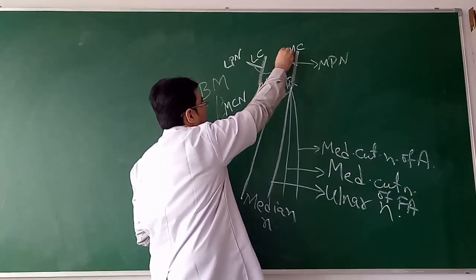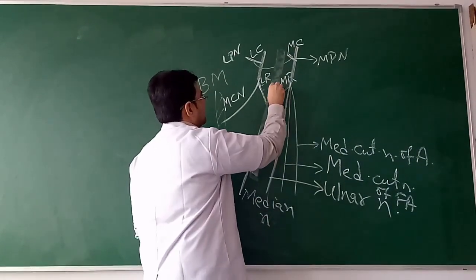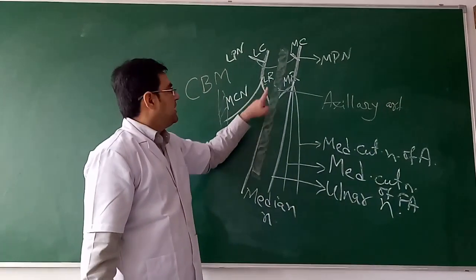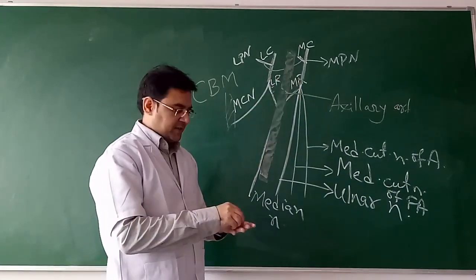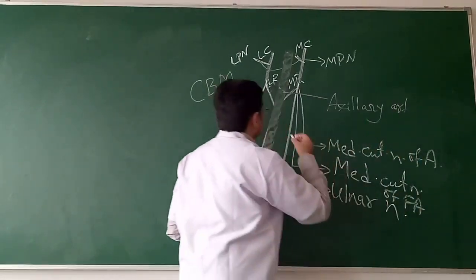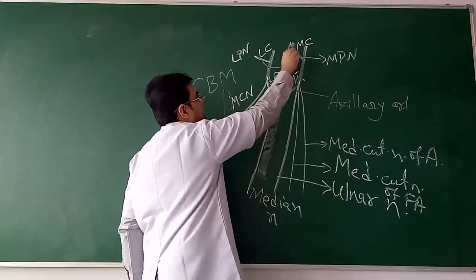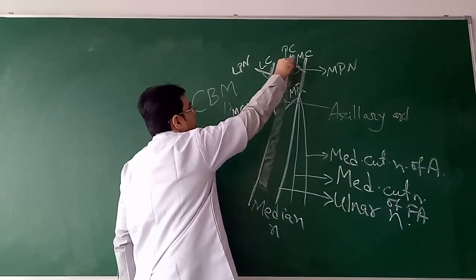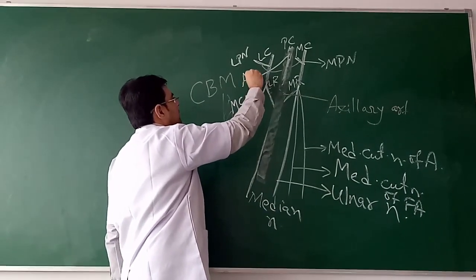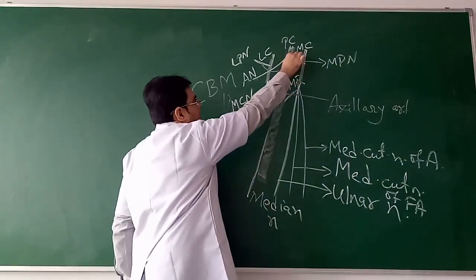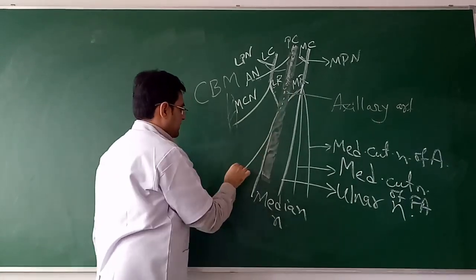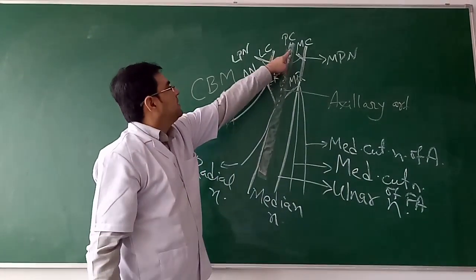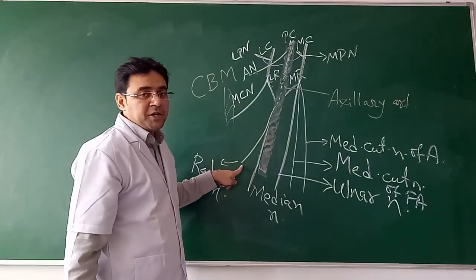Between the two cords we find the axillary artery. Lateral to the axillary artery lies the lateral cord, and medial to it lies the medial cord. Behind the axillary artery you will find the posterior cord of the brachial plexus. The posterior cord, situated posterior to the axillary artery, gives off in the upper part the axillary nerve. The main continuation of the posterior cord is the radial nerve, which is the thickest nerve of the posterior cord.